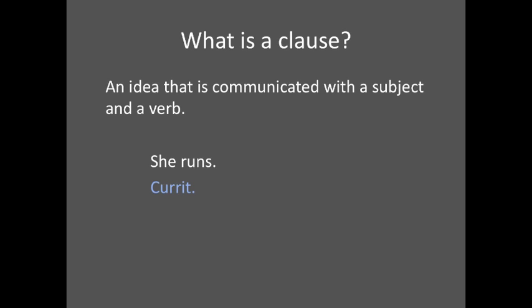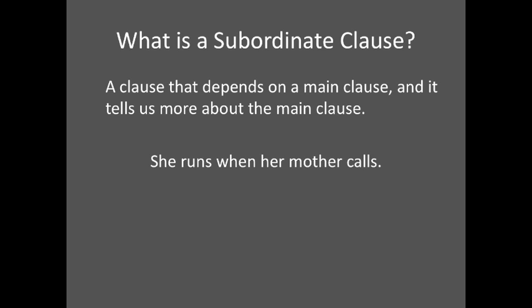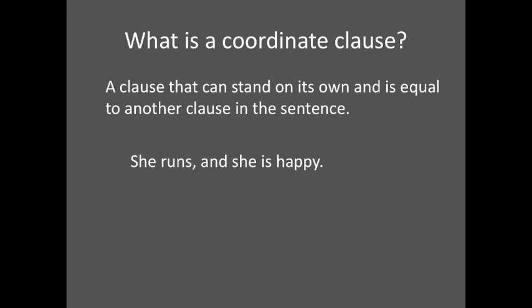So now, what are subordinate clauses and coordinate clauses? A subordinate clause is a clause that depends on a main clause and tells us more about the main clause. It cannot stand on its own. For example, 'She runs when her mother calls.' 'When her mother calls' is the subordinate clause — it qualifies when she runs and cannot stand on its own; it needs a main clause. A coordinate clause is a clause that can stand on its own and is equal to another clause in the sentence. 'She runs, and she is happy' are two coordinate clauses. Both can stand on their own as perfectly understandable sentences.